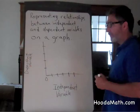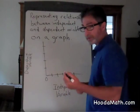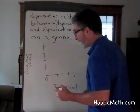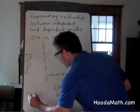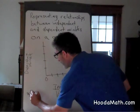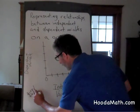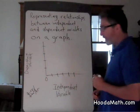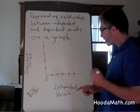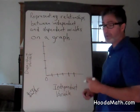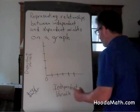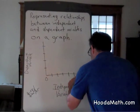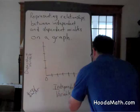If Marian is a plumber and she makes $20 per hour, the way we would graph this is we would first represent her independent variable, which would be hours — the hours she works.